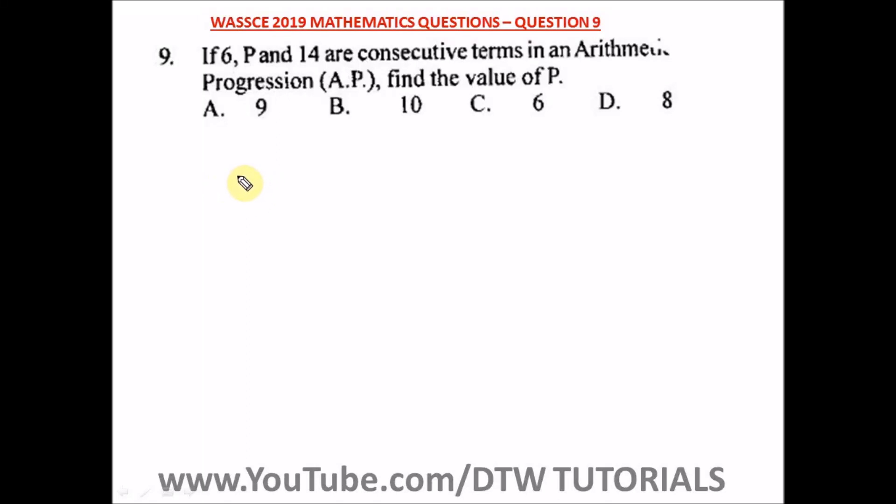Question 9 of the WASSCE 2019 mathematics past question says if 6, P, and 14 are consecutive terms in an arithmetic progression AP, find the value of P.